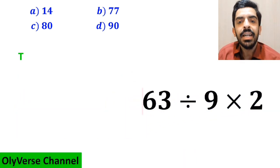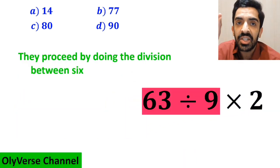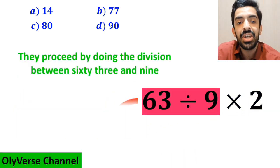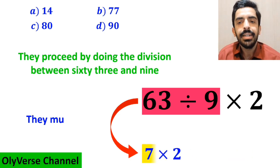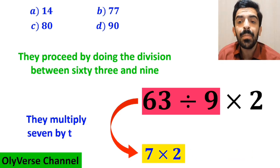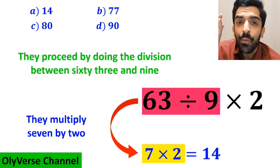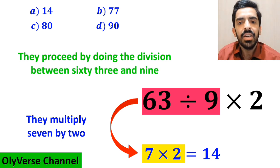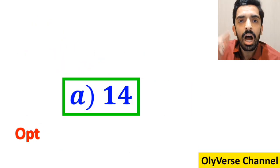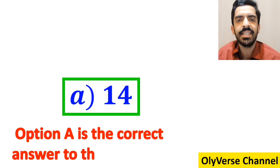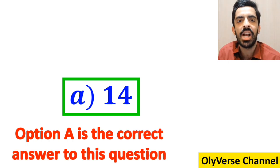Then they proceed by doing the division between 63 and 9, which gives them 7 times 2. Finally they multiply 7 by 2, ending up with the answer 14, and quickly say that option A is the correct answer. However, that's definitely wrong.